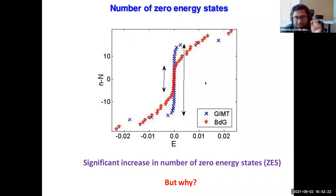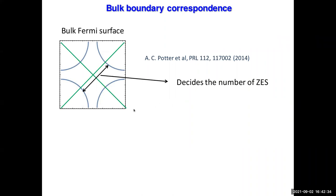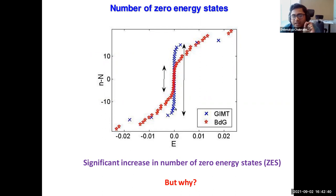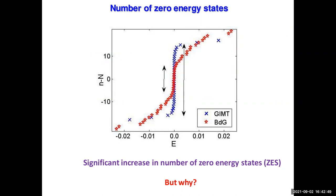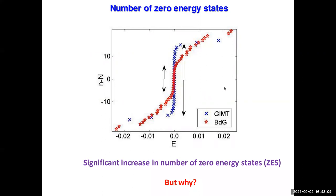One concern: the comparison may be unfair because GIMT changes the bulk bandwidth, density, and exchange interactions via the Gutzwiller renormalization — so the bulk is different. We need a correct comparison fixing the bulk.